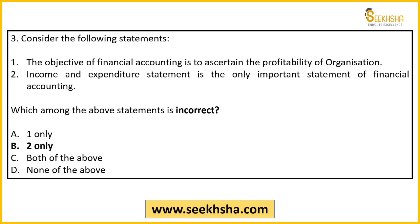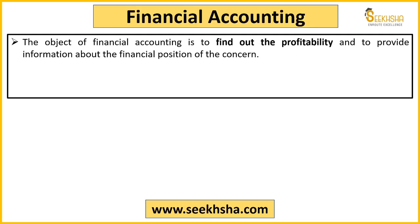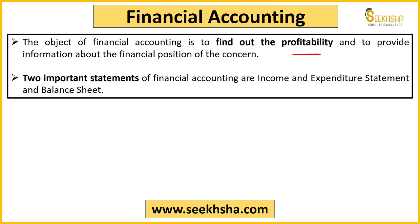Right answer here is option B — second statement incorrect है और पहला statement correct है। पहला statement क्यों correct है — financial accounting के अंदर हम quantitative transactions को record करते हैं, ultimately profitability निकाल लेते हैं — यही main objective है। अब यह जो financial accounting होती है इसमें दो statements होती हैं: एक income and expenditure statement — जिसमें कहाँ से पैसा आया, कहाँ खर्चा हुआ — और दूसरी balance sheet — जिसमें assets and liabilities होती हैं। तो दो important statements हैं, एक नहीं।